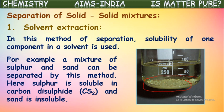In this method, one of the two solid materials dissolves into the chosen solvent while the other remains in solid form and can be separated easily by filtration. Carbon disulfide dissolves sulfur, so by using solvent extraction, sand can be separated from sulfur.